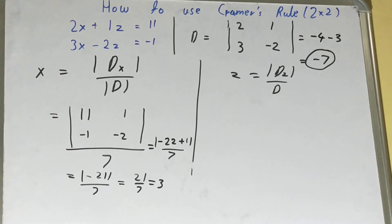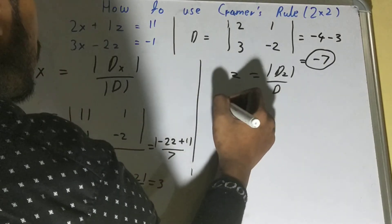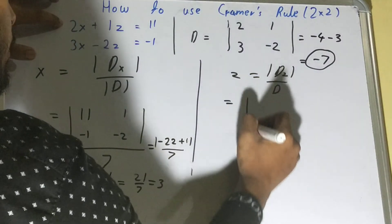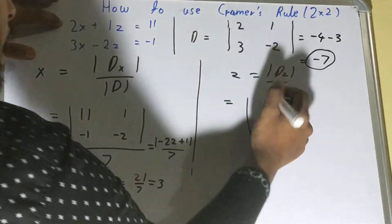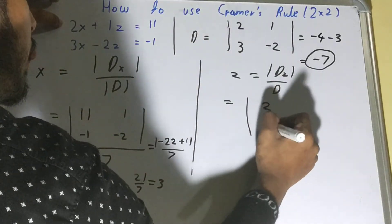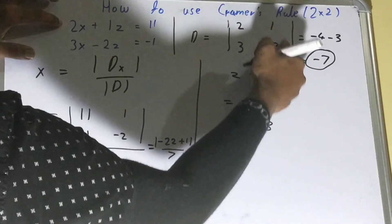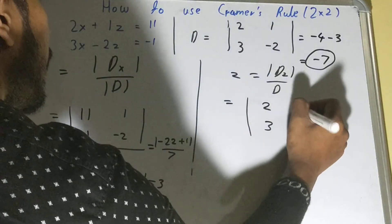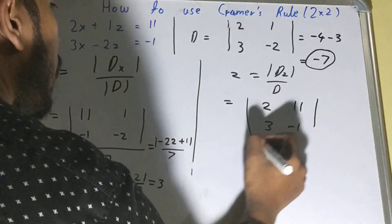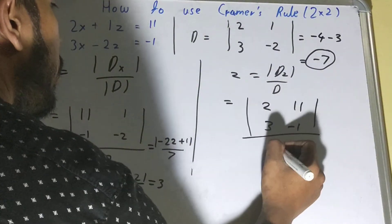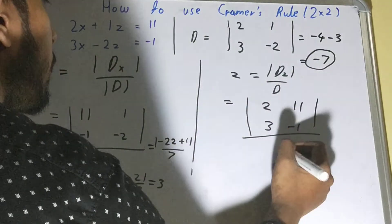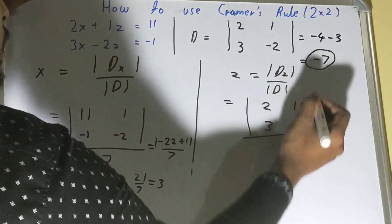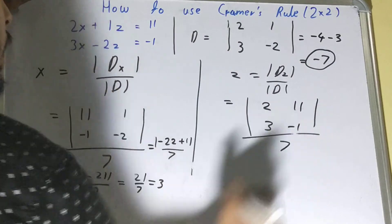Now let's quickly find the value of z. For the dz matrix, you replace the coefficients of z with the constant values — that is 11 and minus 1. In the denominator, since we again have the absolute sign, we use the positive value of the determinant, which is 7.